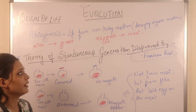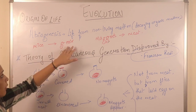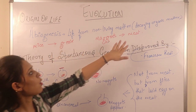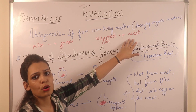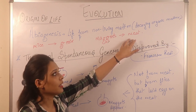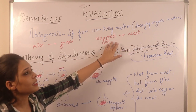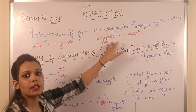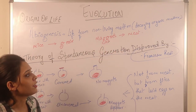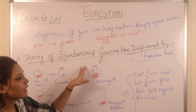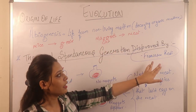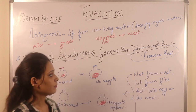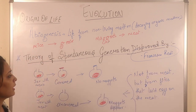For example, here we have meat, and we have maggots. Spontaneously, we call it the theory of spontaneous generation. But this theory was disproved by Francisco Redi.